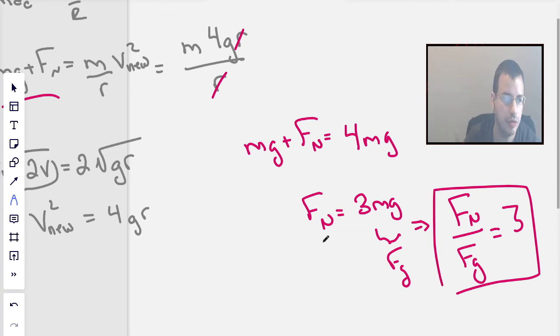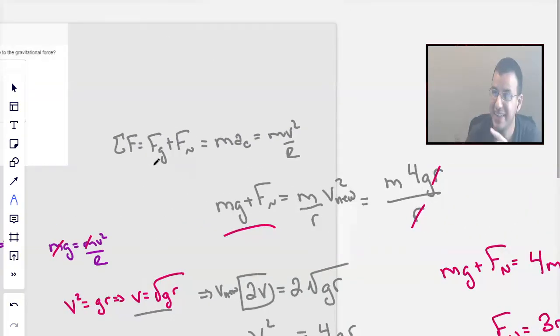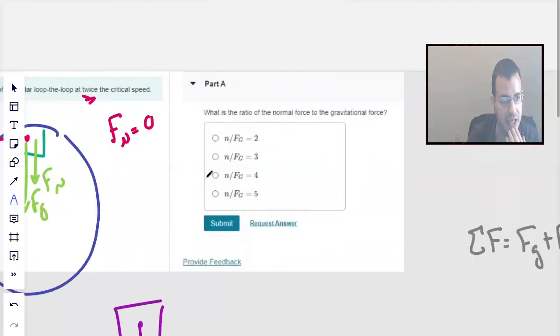Bam. There we go. So let's see if that's a possible answer, which would be nice if it is. Right here. n, I'm going to see that's normal force over force due to gravity equals 3. Hope that helped. See you next time.